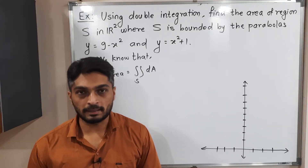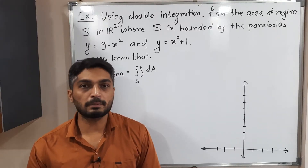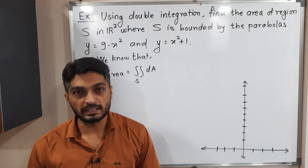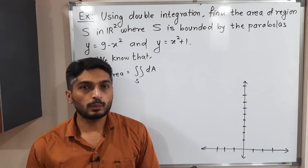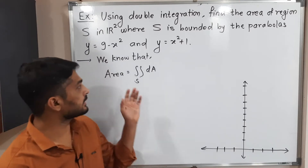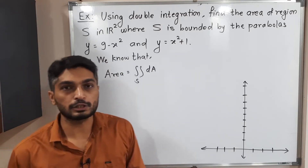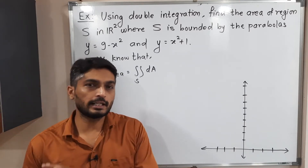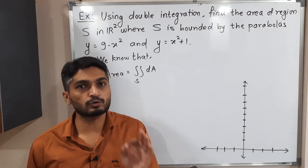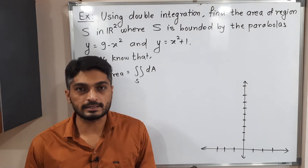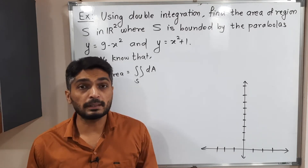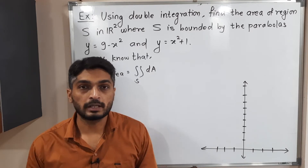Let us discuss this example. In this example, we have to find area using double integration. We have a very simple formula: area is equal to double integration dA. There is no function — we simply have to solve the double integration over the region S. The main part of this example is finding the region.